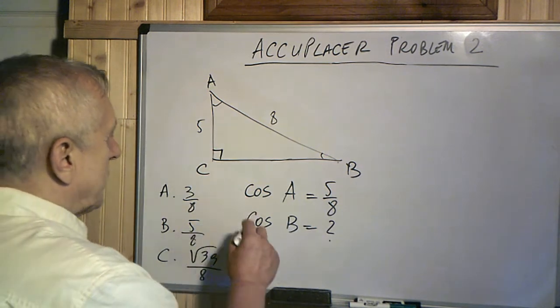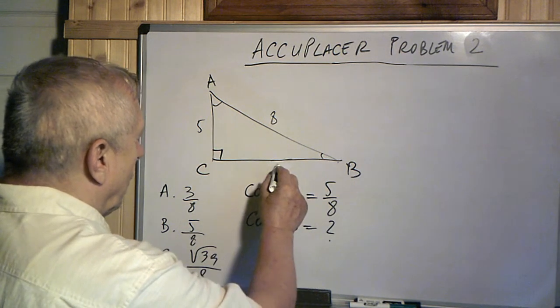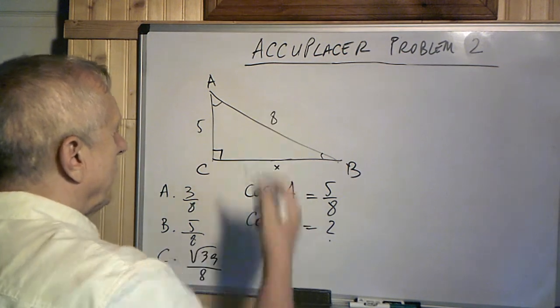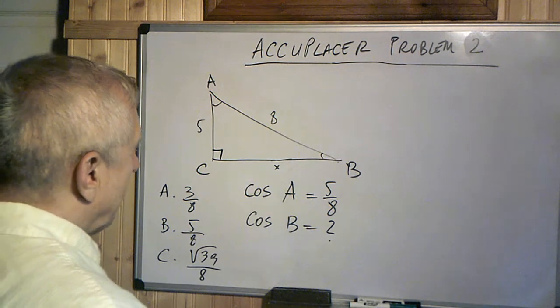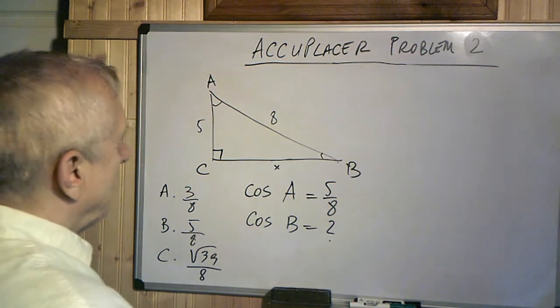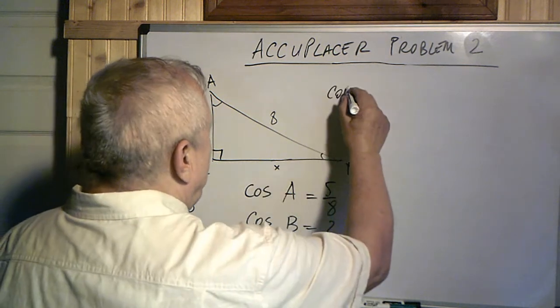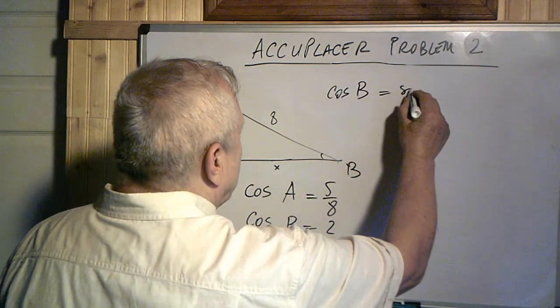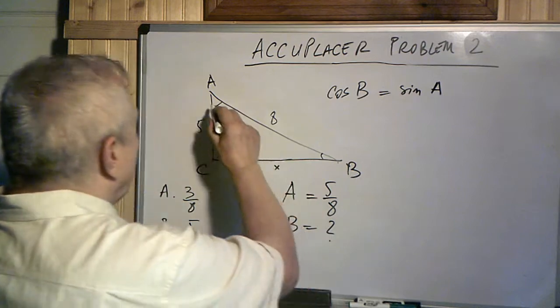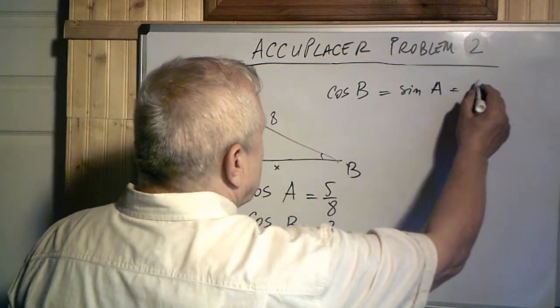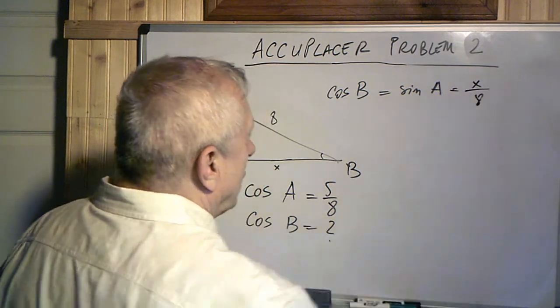The cosine of B, that will be this side, which we don't know what might be, over 8. A multiple of x over a multiple of 8. At the same time, sine of A is the same thing. So cosine of B, which we have to find out, equals actually sine of A. Sine of A is the opposite leg over the hypotenuse. So it is x over the multiple of 8.